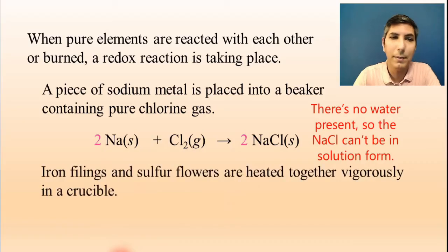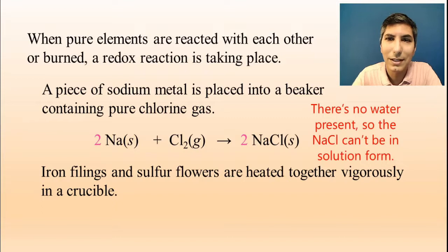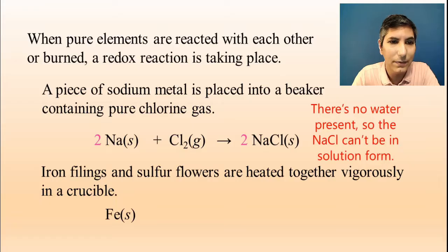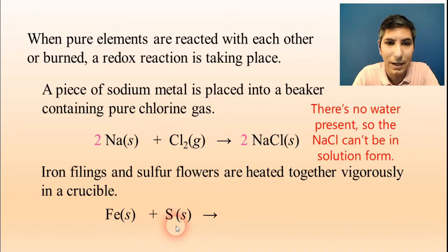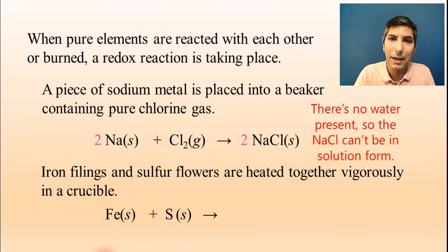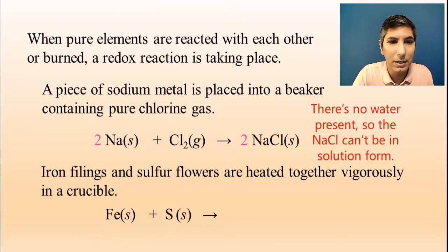How about iron filings and sulfur flowers heated together vigorously in a crucible? In this case, we have iron, Fe solid, and sulfur, S solid. If heated together vigorously, they're going to form an ionic compound — FeS.